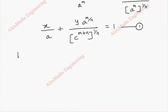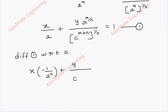Now we are going to differentiate equation 1 with respect to a. So x is a constant. The differentiation of 1/a gives -1/a². In the same way, y divided by c^((m+n)/n) are constants, and the differentiation of a^(m/n) is (m/n) · a^(m/n - 1), which is equal to 0.